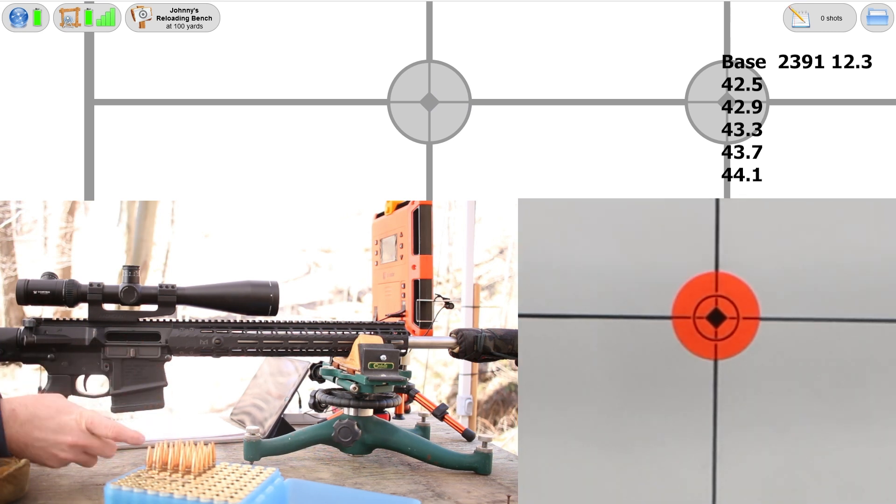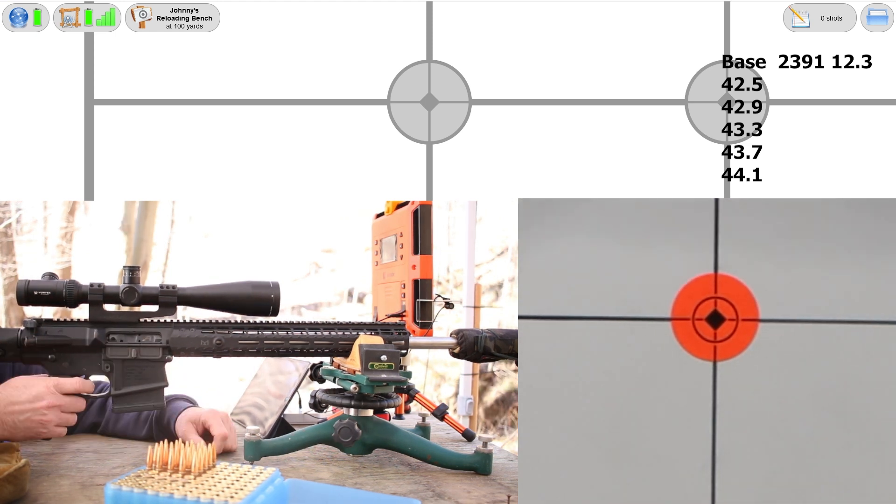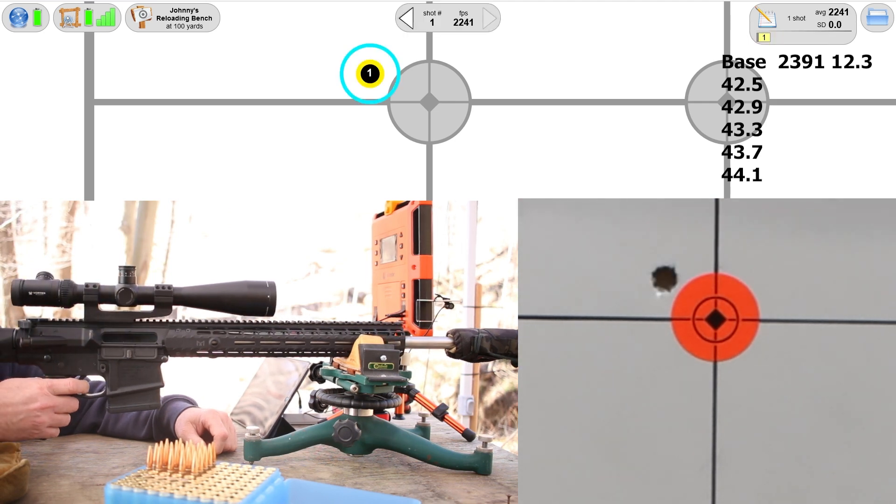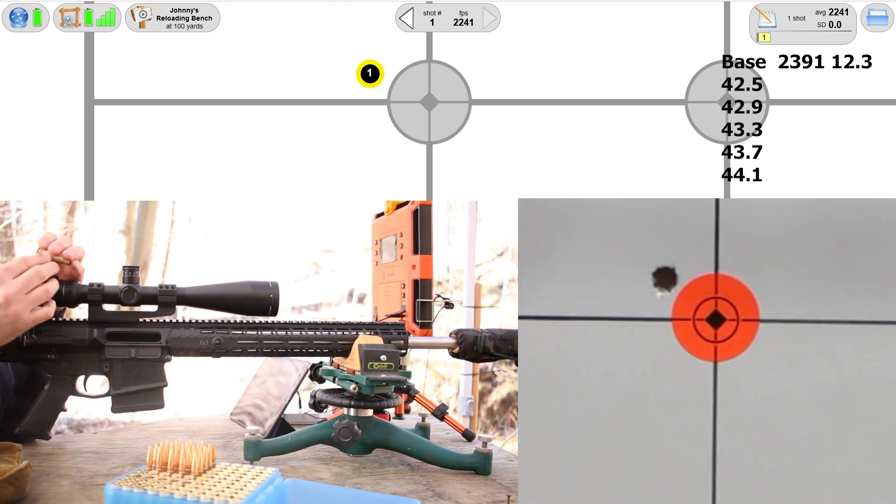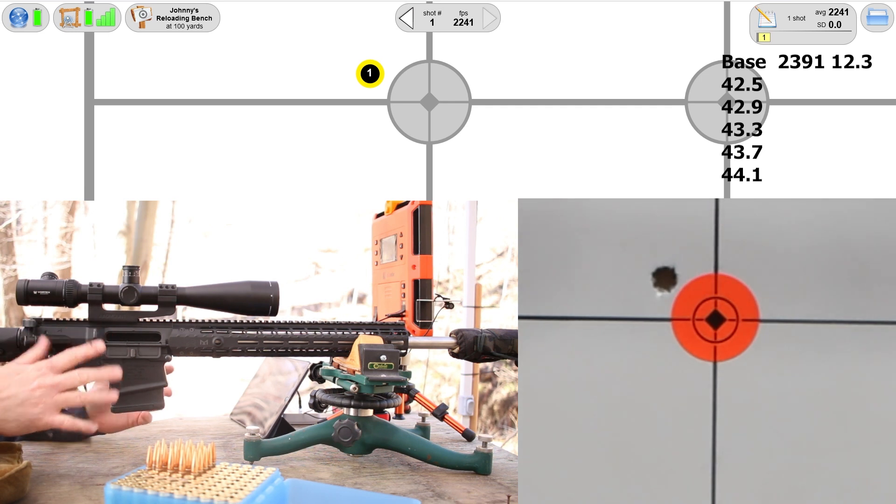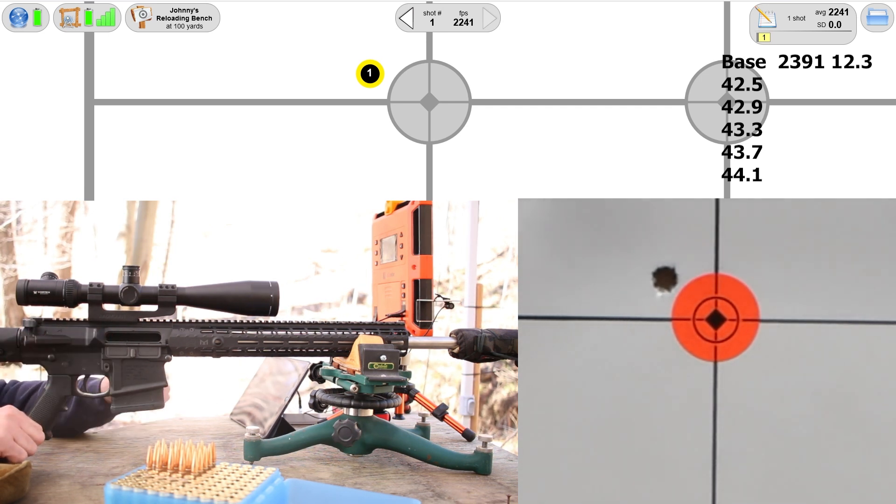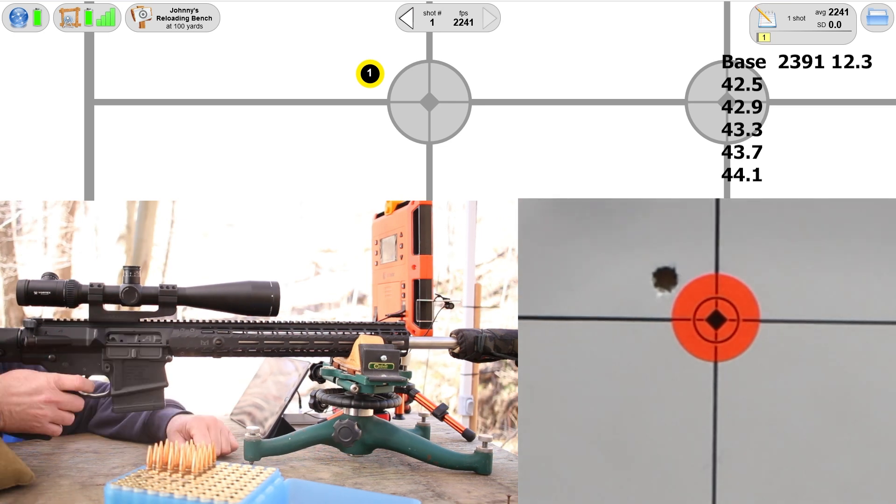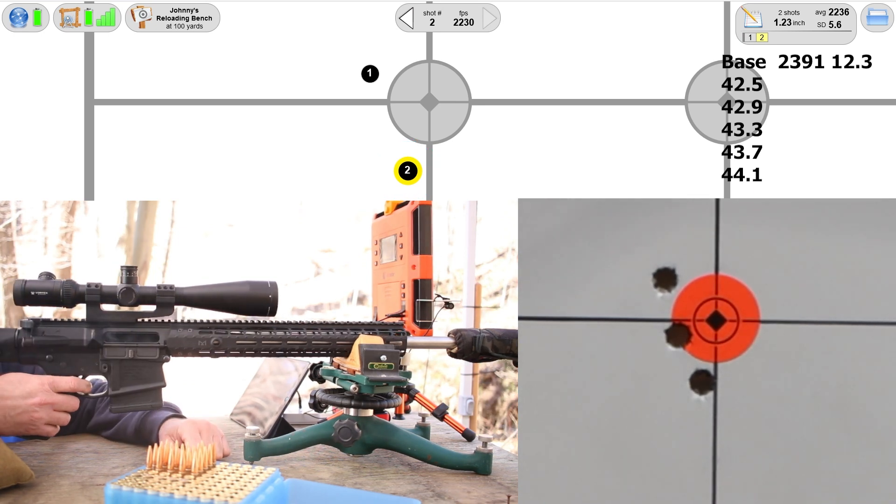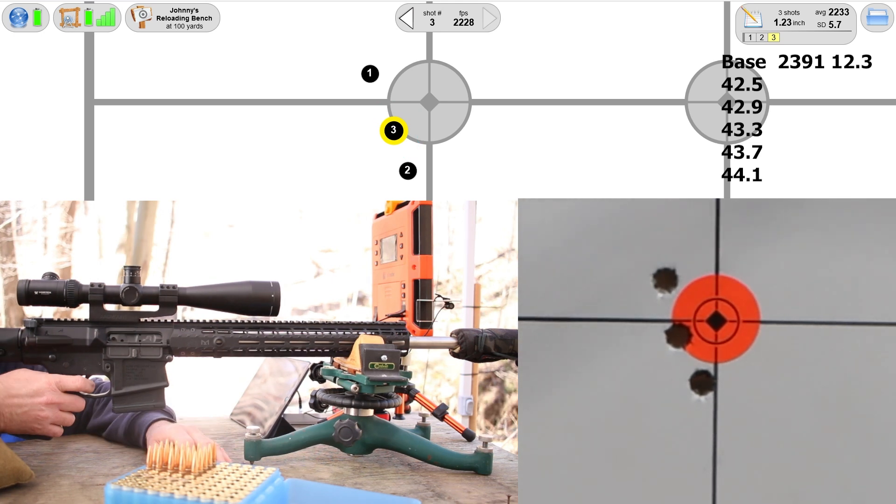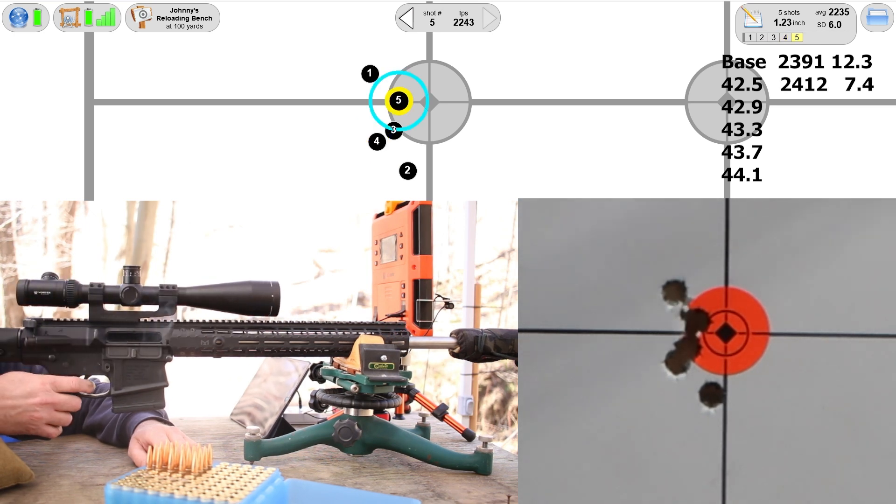Holy crap, this is going to be fun. That velocity ended up being 2391, standard deviation 12.3, and the group was a half inch. Fantastic. Let's move over to this dot here and we'll get started with our 15.5 loads. First up, 42.5 grains.